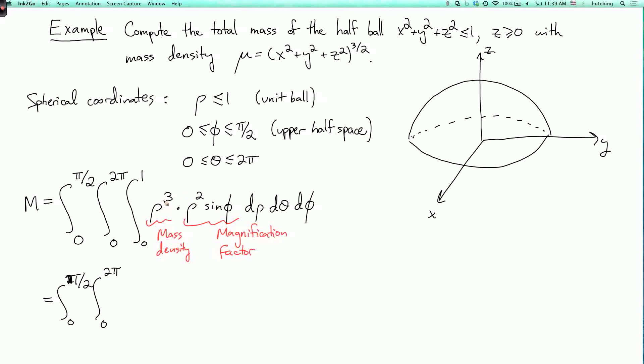Now I have to integrate rho to the fifth from 0 to 1. The sine phi is like a constant here, so that just gives me 1 sixth. So I have 1 over 6 times sine phi, d theta, d phi.